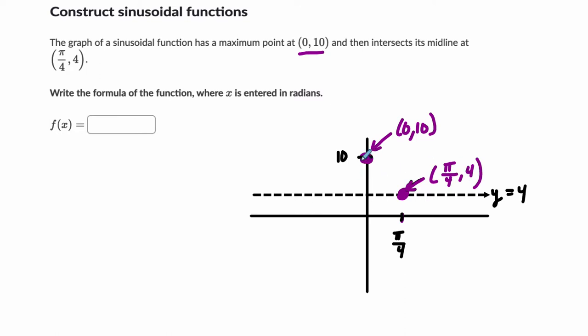So what do we know? We know that our amplitude is the distance between this maximum point and this line, so my amplitude is 6. 10 minus 4 is 6. My midline is at 4.